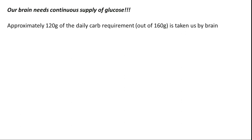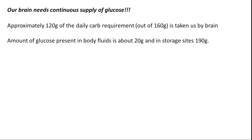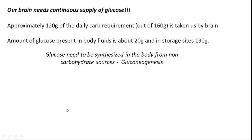Approximately 120 grams of the daily carbohydrate requirement — out of 160 grams that we need daily for survival — is actually utilized by the brain alone. That's so huge. The amount of glucose present in body fluids is about 20 grams in 6 liters of blood, since we maintain about 80 to 120 milligrams per deciliter. A deciliter is 10 ml, so doing the math brings it to close to 20 grams. In glycogen, we have 600 grams total, but readily usable is approximately 120 to 200 grams only.